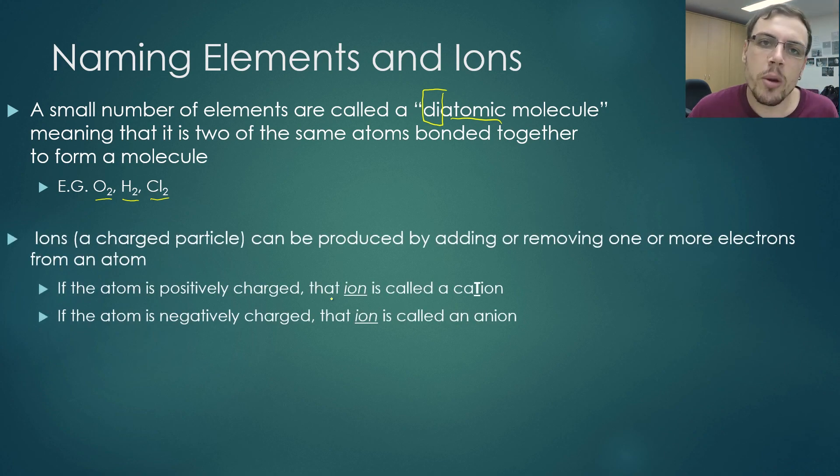Now, let's talk about ions. An ion is a term for an atom that contains a charge. Remembering from our previous module is that what influences the charge of an atom is the movement of electrons.